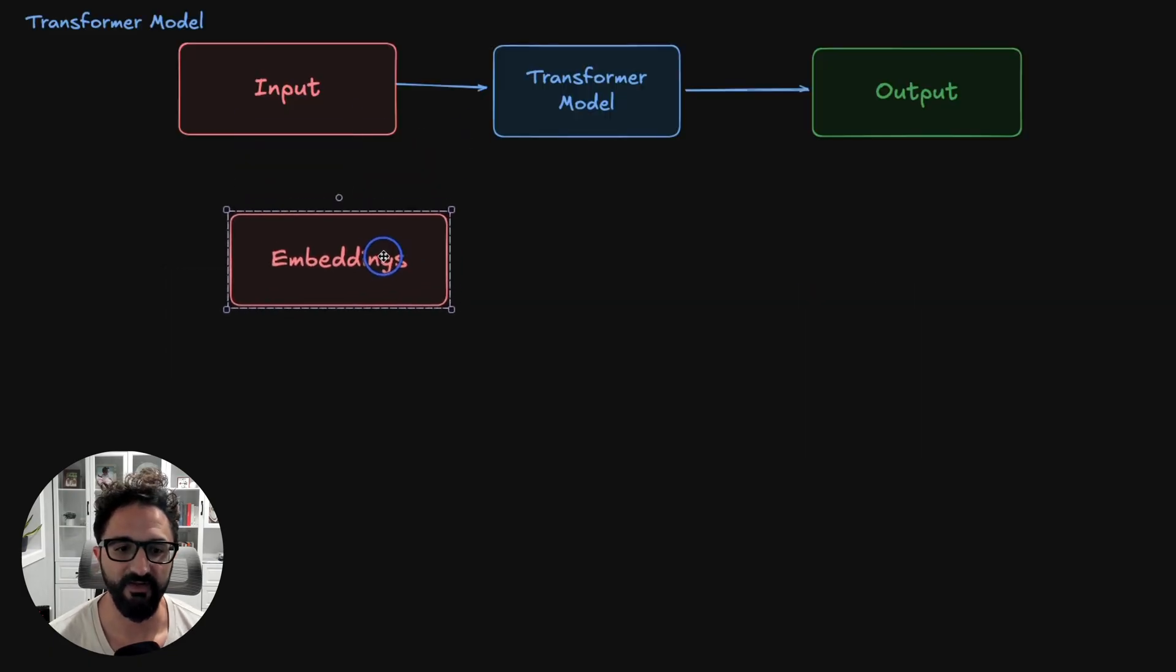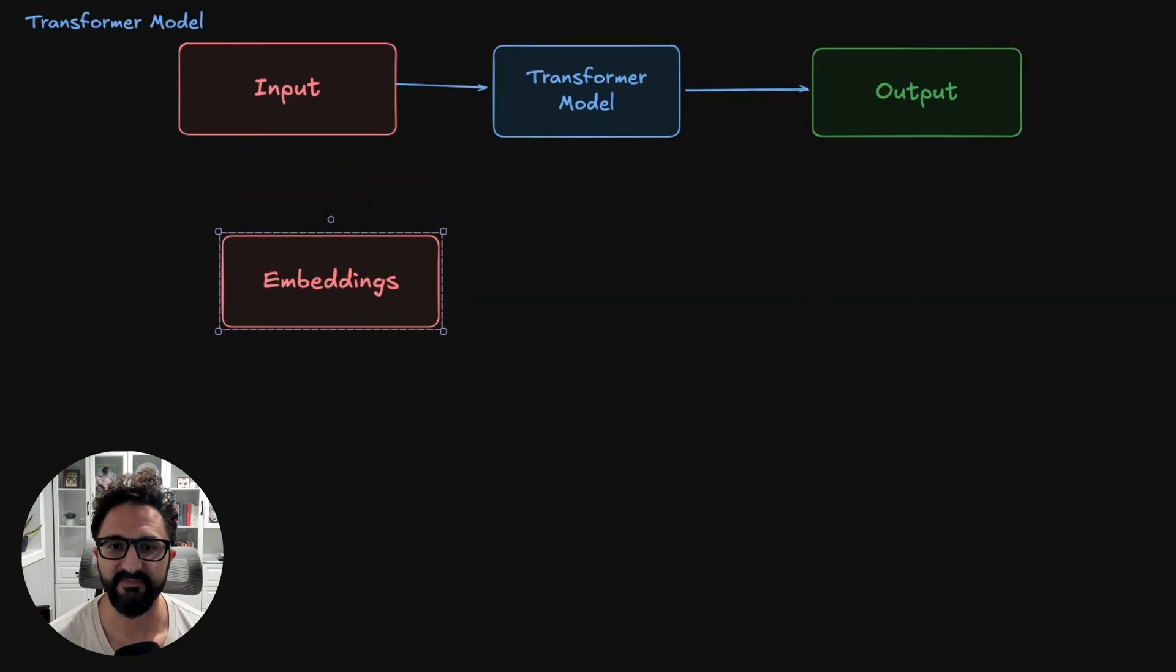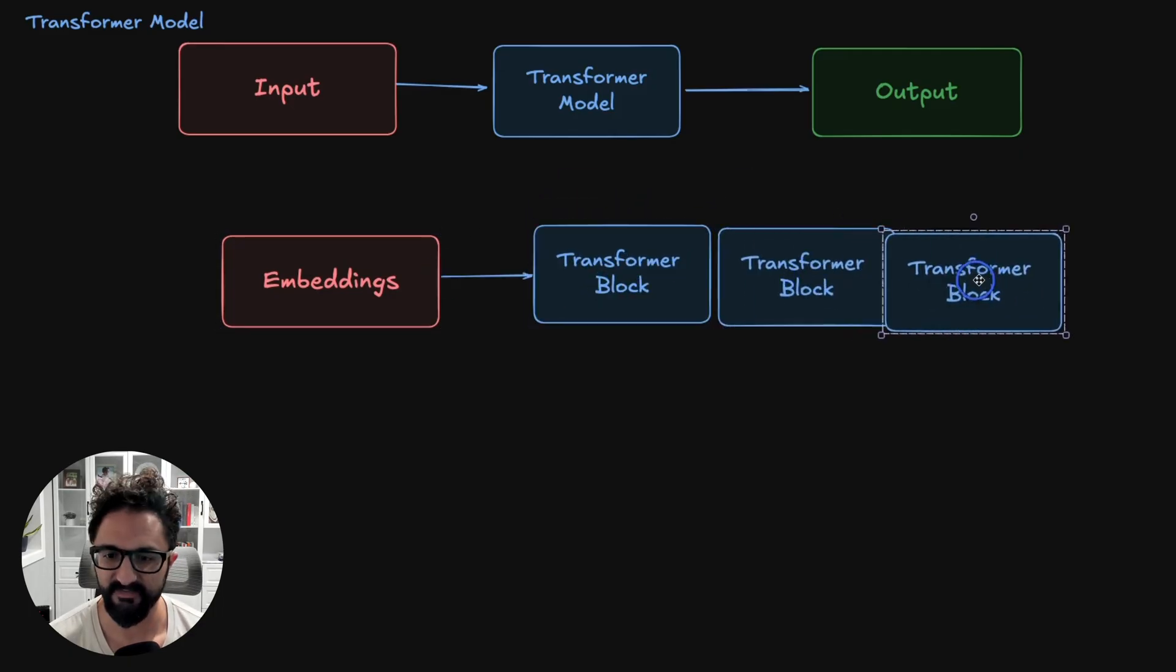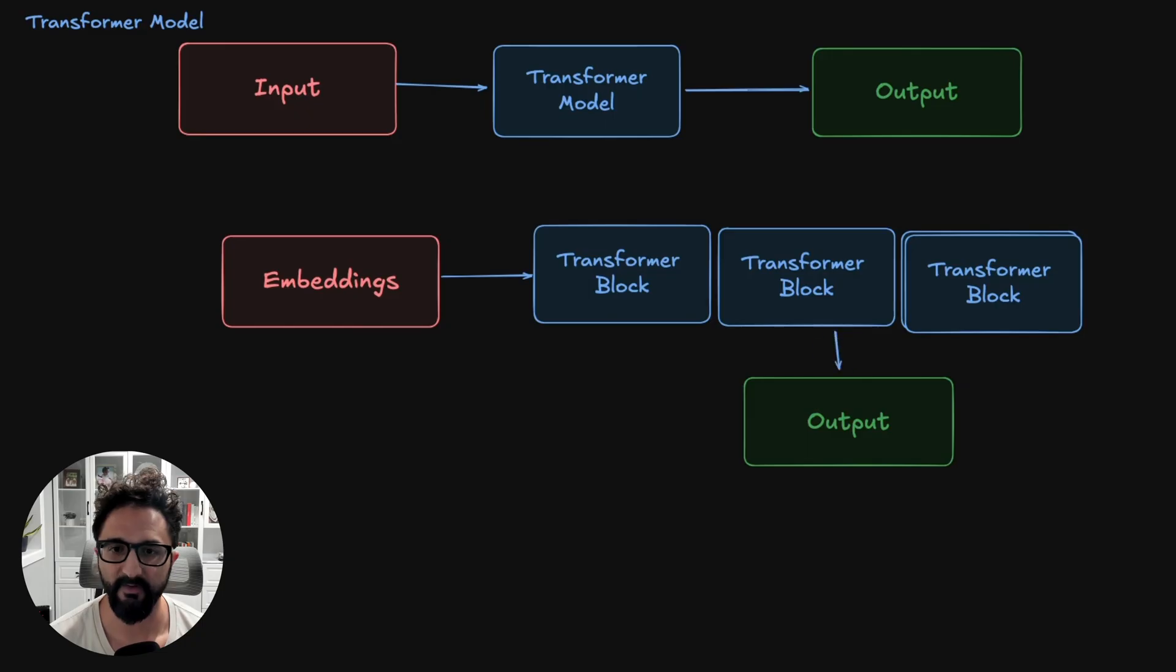On an architectural level, we need to take our input and turn it into embeddings, which are numbers that represent the data. This flows into a series of transformer blocks that will then come together and produce our output. There's some connective tissue in there that I'm skipping over, but this is the idea.